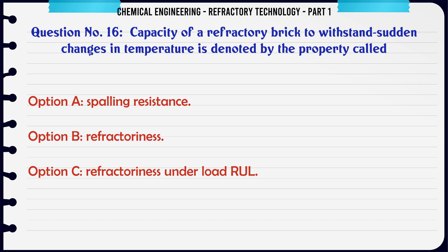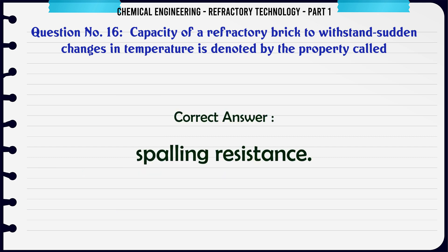Capacity of a refractory brick to withstand sudden changes in temperature is denoted by the property called: A. Spalling resistance, B. Refractoriness, C. Refractoriness under load (RUL), D. None of these. The correct answer is Spalling resistance.